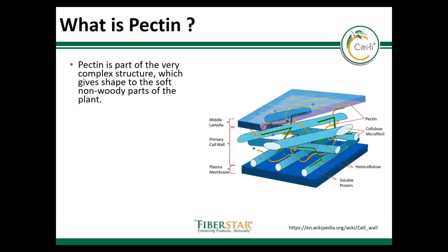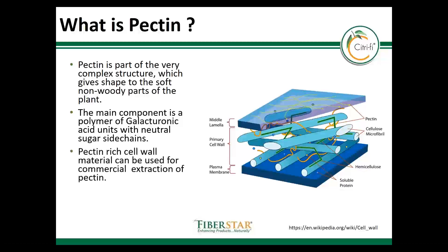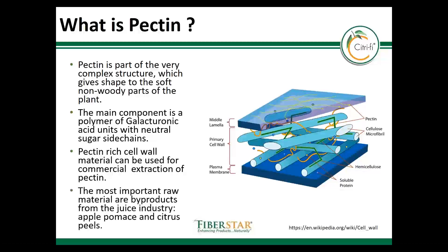The main component, the backbone, is a polymer of galacturonic acid units. Pectin-rich cell wall material serves as a source of commercial pectin production. The most important raw materials are by-products from the apple juice and citrus juice industries.